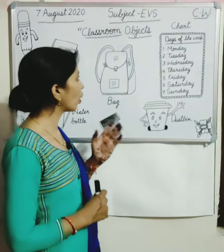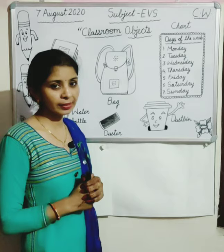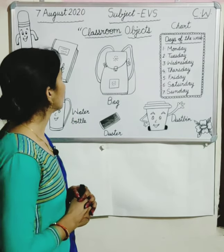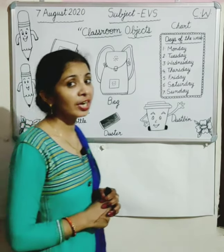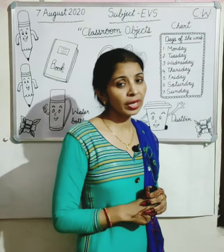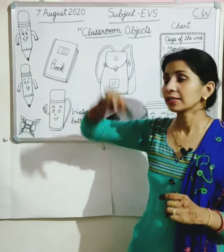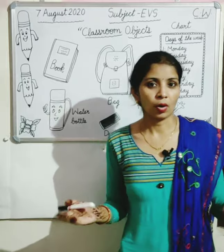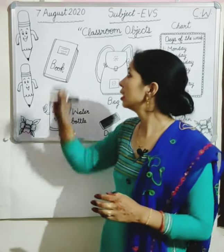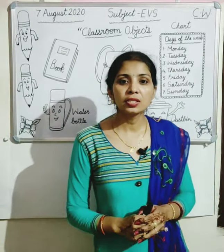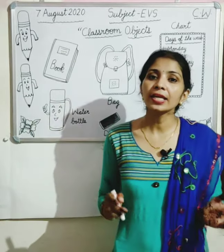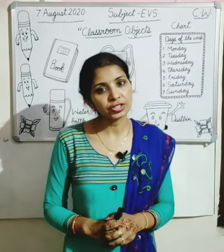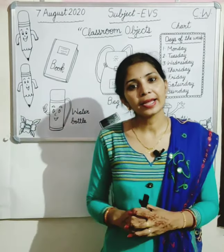Look at the board everyone carefully. Now, firstly tell me which date is today? 7th. Which month is going on? August 1st. And which year is going on? 2020. Now tell me which day is today? Friday.